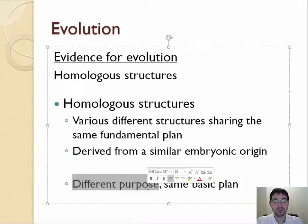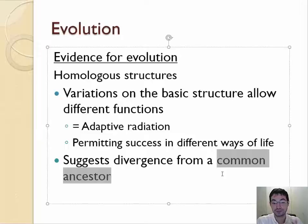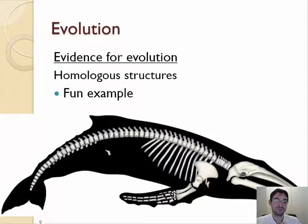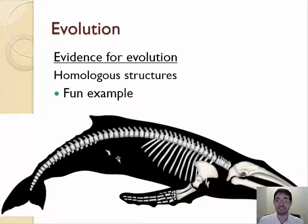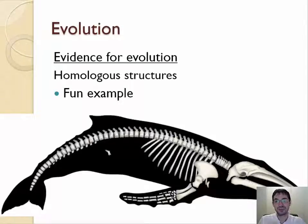One of my favorite examples of homologous structures — structures with a different purpose but the same basic plan, because they come from a common ancestor — is that of a whale. When you look at the whale skeleton, do you see any bone that looks strange? What about the hip? Whales have legs — they're just stuck in their stomachs and not even connected to their backs anymore. They're just floating in fat and they're useless. But if we look at the evolution of a whale, we can see that over time the whale started evolving from something that looks a little bit like a wolf, and turned into something that looks like a whale today.